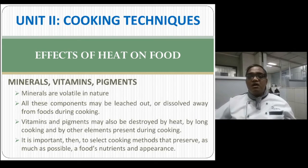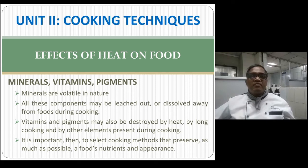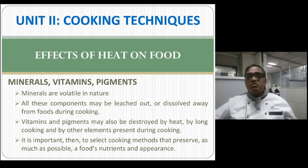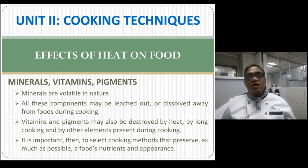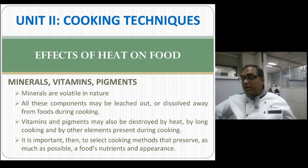Minerals, vitamins, and pigments are volatile in nature — they do not resist heat. Once heat is applied, they become volatile and escape into the air. Since we cannot eat most food uncooked, we need to cook at a shorter time and at a very low temperature to minimize loss. As a chef, our main role is to control the loss as much as possible by choosing a good cooking method.